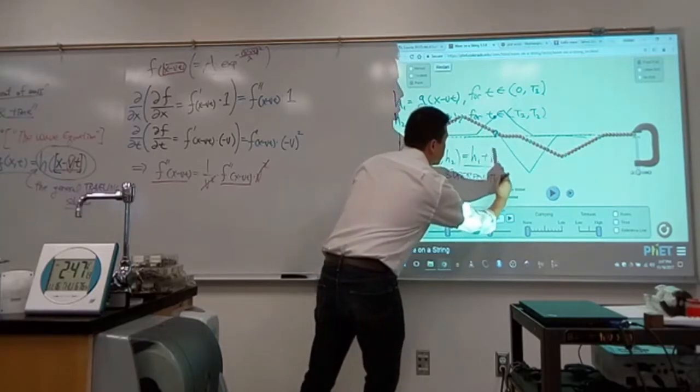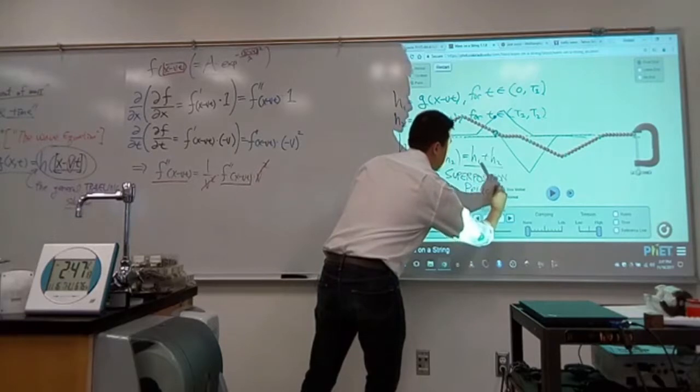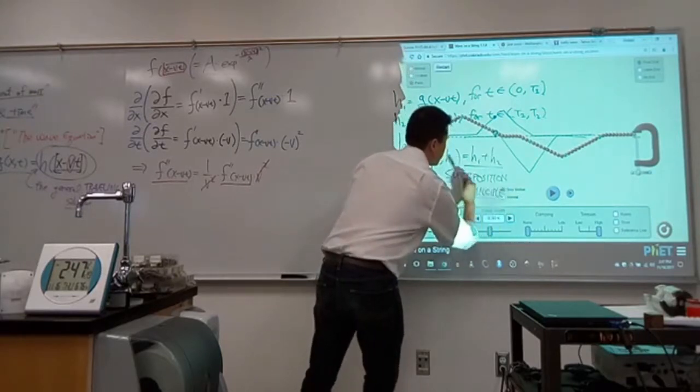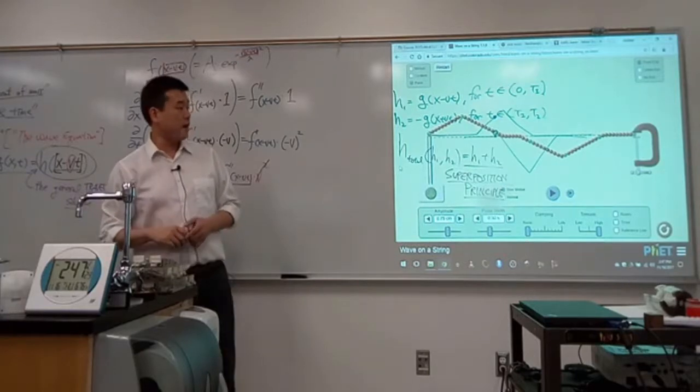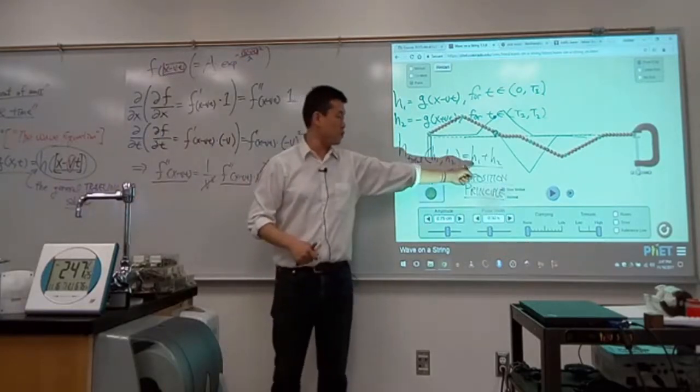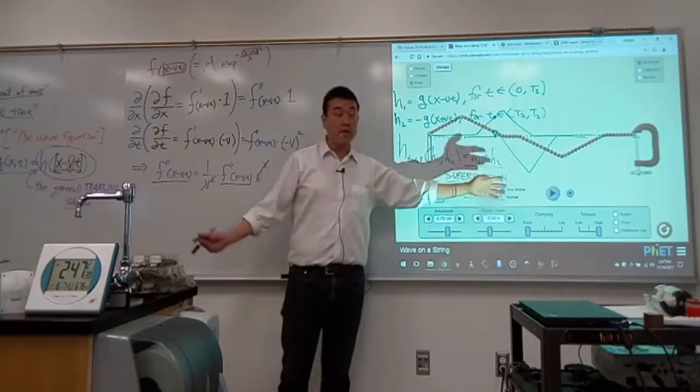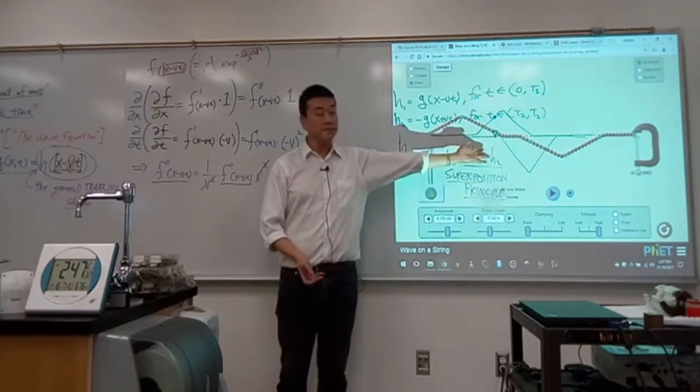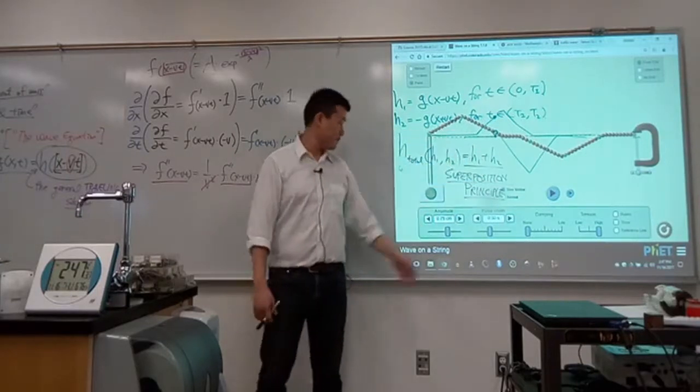I think I might have mentioned this once, maybe in the context of calculating rotational inertia. It's the idea that you have one source of influence, you have another source of influence, and their combined influence is a simple sum. It doesn't do anything complicated.